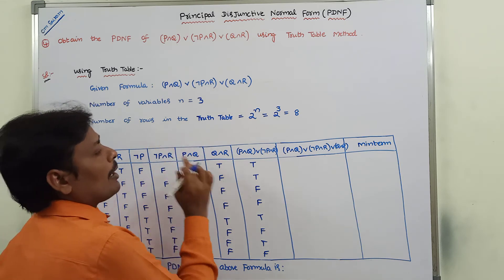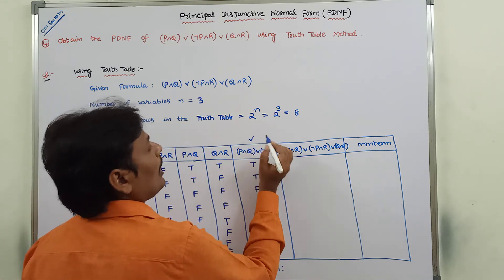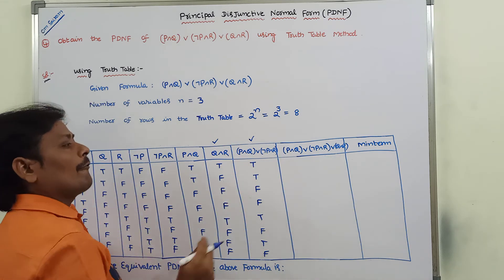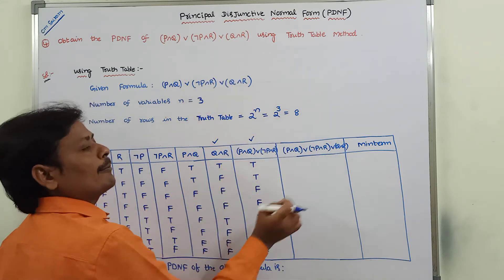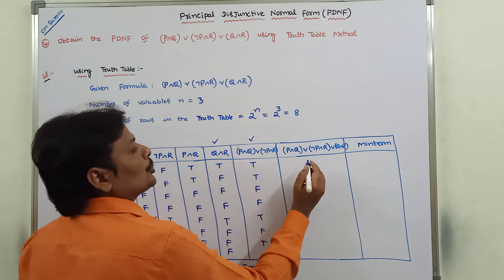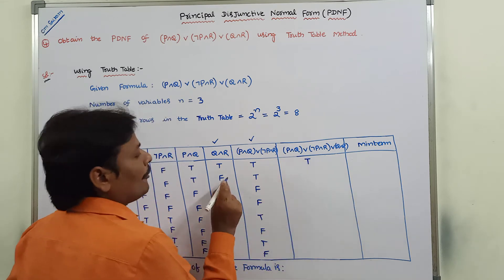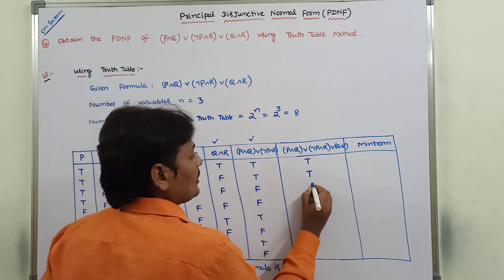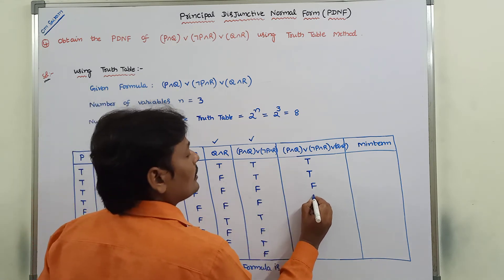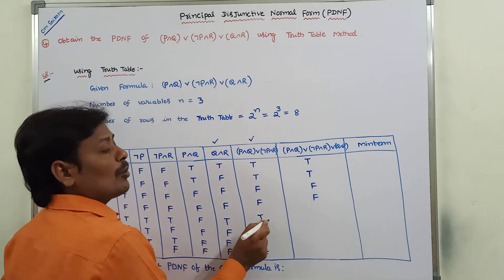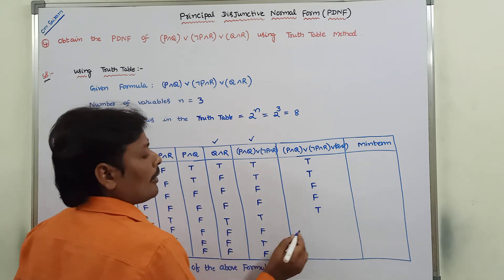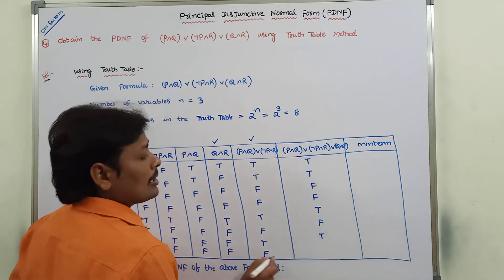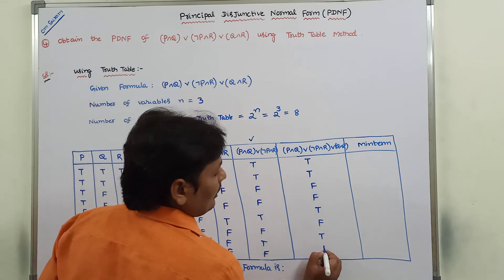Next, observe which two columns we have to combine — that is the (P∧Q ∨ ¬P∧R) column and the Q∧R column. Combining them with OR gives the final formula column. The resulting values are: true OR true = true, false OR true = true, false OR false = false, false OR false = false, true OR true = true, false OR false = false, false OR true = true, false OR false = false.